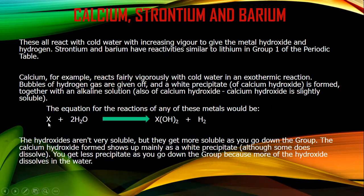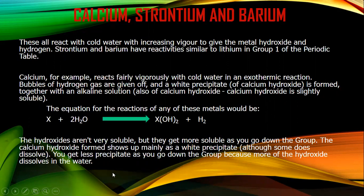The general equation is: metal X — like calcium, strontium, and barium — reacts with two molecules of water to give metal hydroxide and hydrogen gas. The hydroxides are not very soluble, but their solubility increases as we move down the group. Calcium hydroxide forms as white precipitates, but as you move down the group, more of the hydroxide dissolves in water and less precipitate is formed.